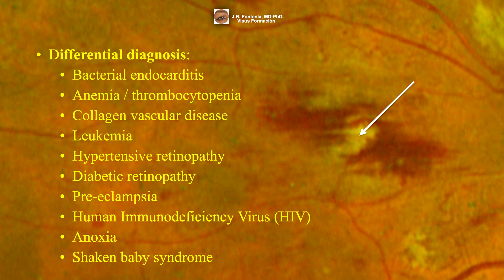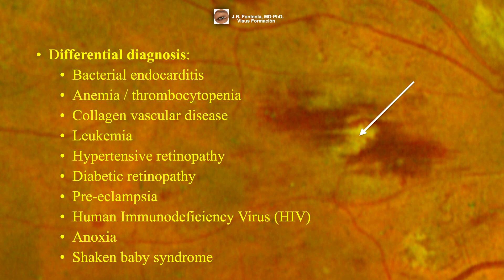Roth believed this spot represented disseminated embolic foci of bacterial abscesses originating from infective vegetation on heart valves. Given recent histological data, Roth spots are now believed to be a result of ruptured retinal capillaries and intra-retinal hemorrhages. A common thread found in these pathologies is a predisposition to endothelial dysfunction that allows disruption of retinal capillaries. Histologic examination reveals that white-center lesions are composed primarily of fibrin, representing a plaque of fibrin and platelets at the site of vessel rupture.